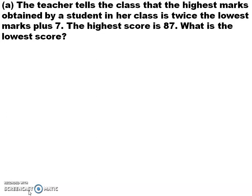The teacher tells the class that the highest marks obtained by a student in her class is twice the lowest marks plus 7. The highest score is 87. What is the lowest score? We have finished reading the question the first time. Now let us start reading the question part by part.